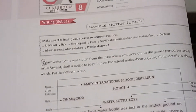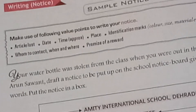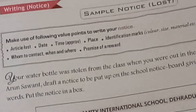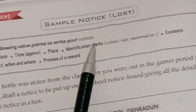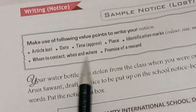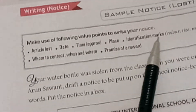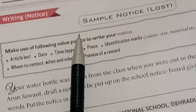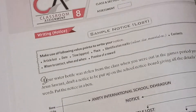For writing a lost notice, the things you have to keep in mind are: what article is lost — you have to make it clear; date, time, place; its identification marks like color, size, material — that is to be given; contents — what is inside it; whom to contact, when and where; and promise of a reward. All these things are to be kept in mind while writing a lost notice. If you want to score full marks, you have to make all these things clear, plus the correct format.